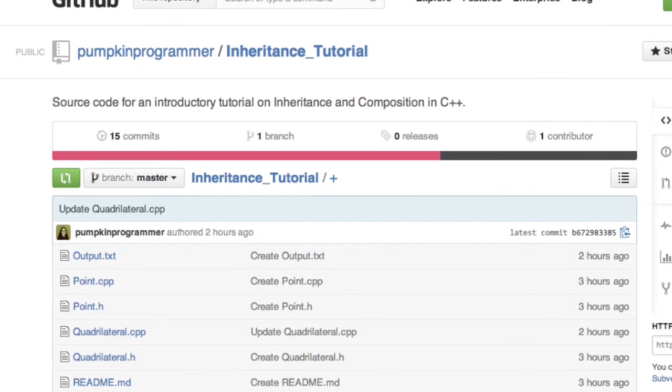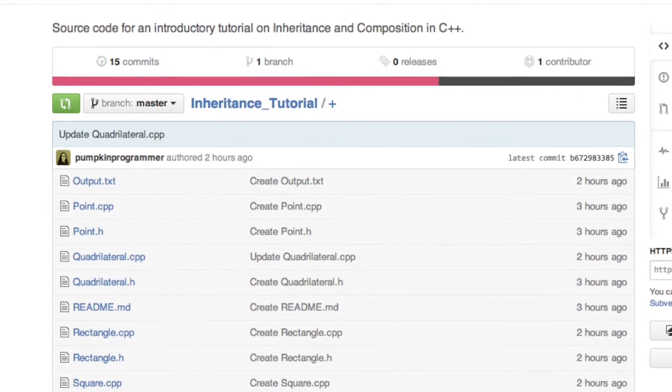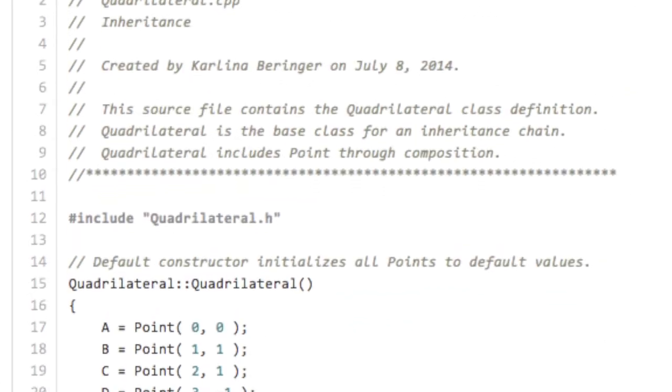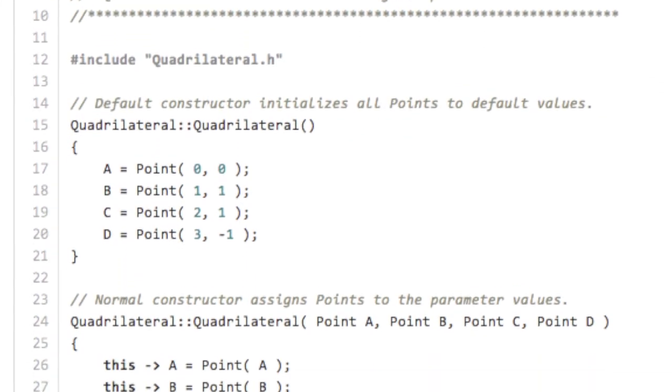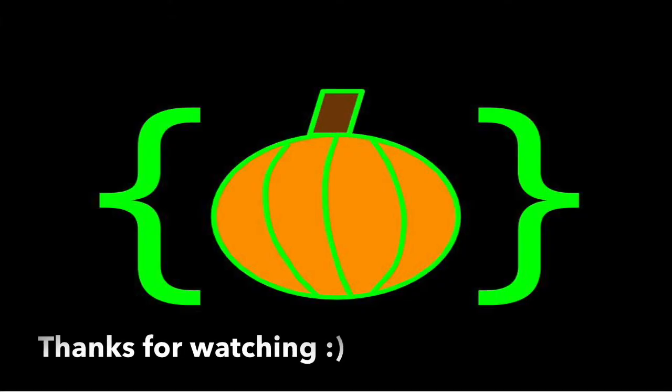To learn more about object-oriented programming in C++, please see the next video in this series, Polymorphism. To get the complete coding example for the tutorial you just watched, please visit the link in the video description. Thanks for watching.